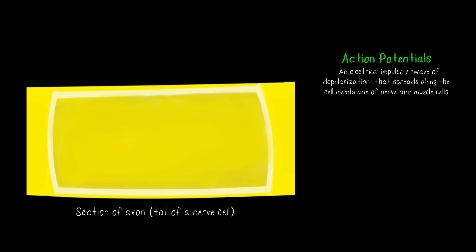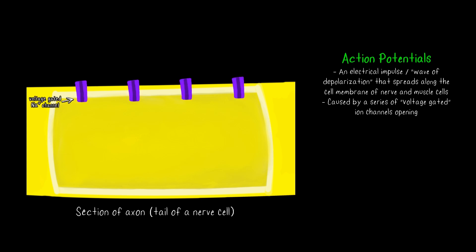Action potentials are electrical impulses. You may also hear them referred to as a wave of depolarization, and they spread along the cell membrane of nerve and muscle cells. They are caused by a series of voltage-gated ion channels opening. An ion channel is just a doorway in a cell membrane that allows ions to pass through, and a gated channel is a doorway that is not always open — they're named for whatever opens them. A voltage-gated ion channel opens due to a change in the charge of the cell membrane, or another way to say that is they open due to a change in membrane potential.